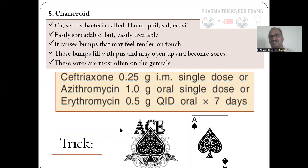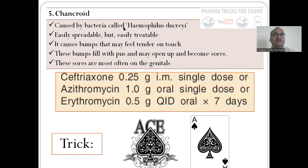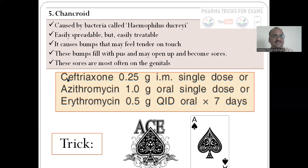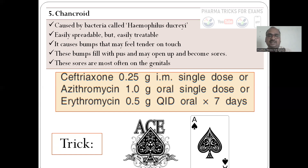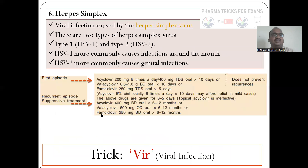For chancroid, caused by Haemophilus ducreyi (a bacterium), the mnemonic is ACE: Azithromycin (A), Ceftriaxone (C), Erythromycin (E) — like ACE inhibitors. Ceftriaxone is given as an IM injection, azithromycin as an oral single dose.